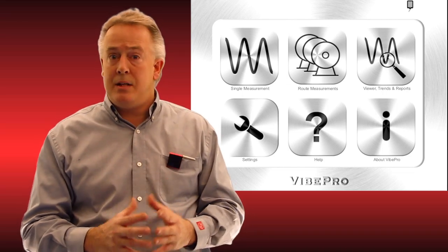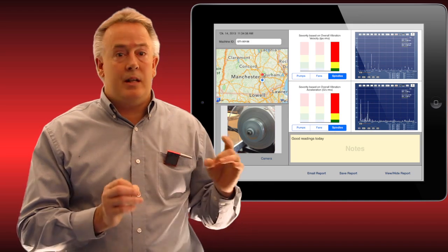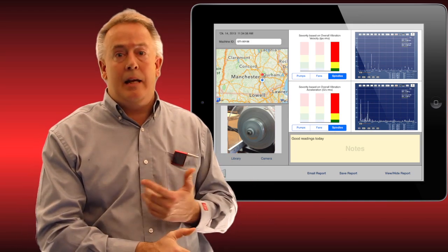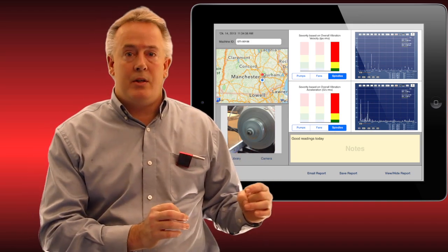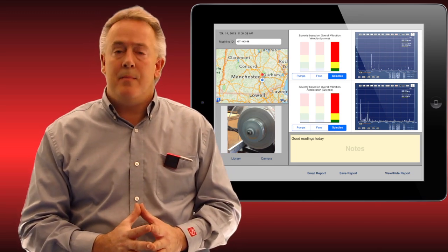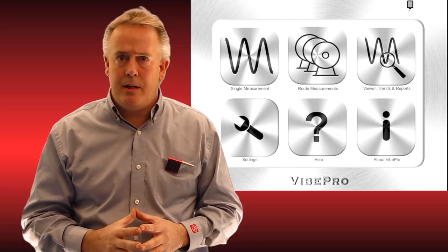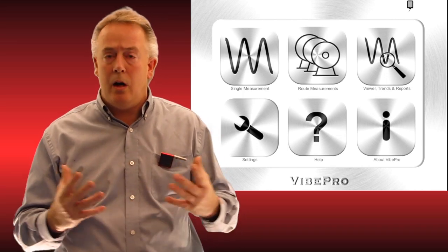So the single measurement mode has some advancements. We can now record velocity and acceleration in the same report with a photo and the geographic map of where that was taken, and it's a beautiful report. But I want to get right into routes and measurements just to show you how severely simple this is for a technician to use.